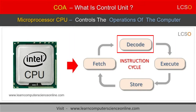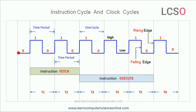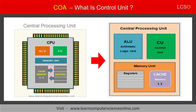The control unit handles the decode operation of the instruction cycle. The control unit is also responsible to regulate the speed of the instruction cycle by regulating the clock speed. The processor also performs all the arithmetic calculations and the logical operations necessary to execute the program instructions.